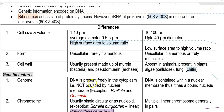Genome-wise, in prokaryotes, DNA is present freely in the cytoplasm and is not bounded by a nuclear membrane. In eukaryotes, the DNA is contained within the nuclear membrane, and thus has a bound nucleus. Such a nuclear membrane is not present in prokaryotes.